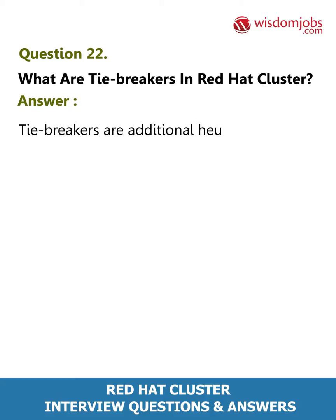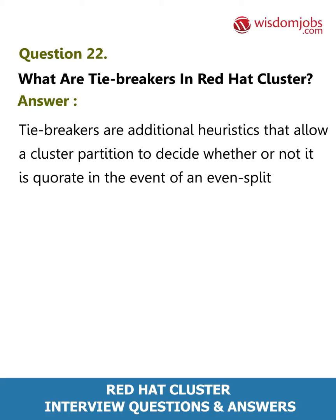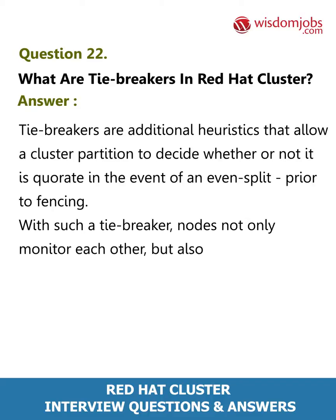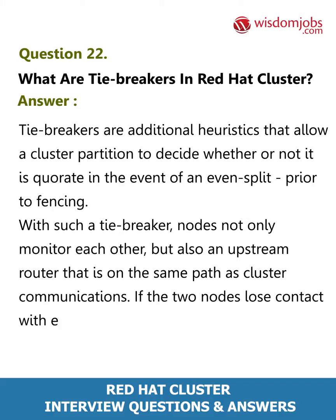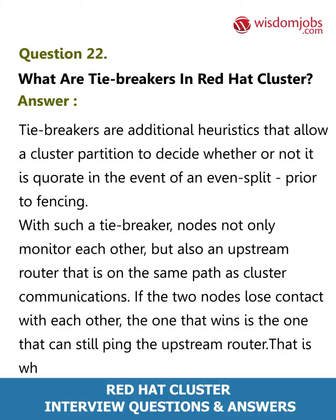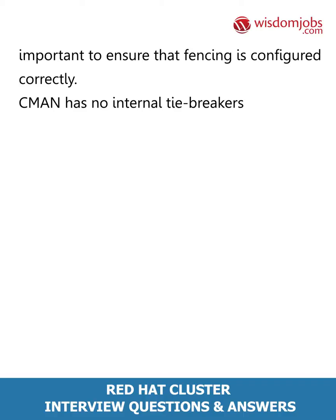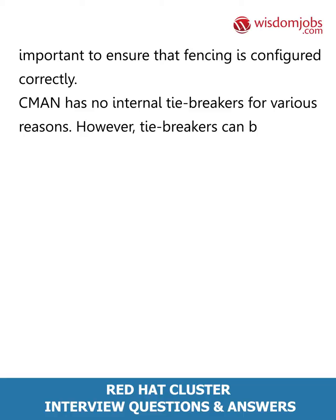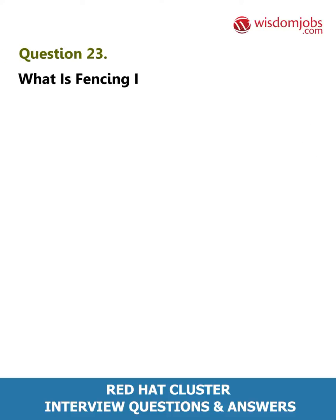Question 22: What are tie breakers in Red Hat Cluster? Answer: Tie breakers are additional heuristics that allow a cluster partition to decide whether or not it has quorum in the event of an even split, prior to fencing. With such a tie breaker, nodes not only monitor each other but also an upstream router on the same path as cluster communications. If two nodes lose contact with each other, the one that wins is the one that can still ping the upstream router. CMAN has no internal tie breakers, however tie breakers can be implemented using the API.